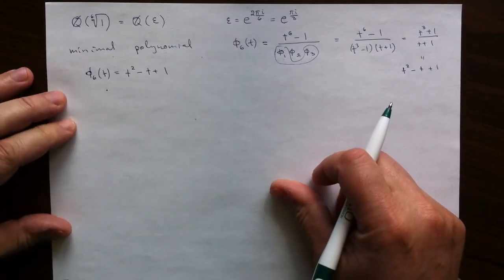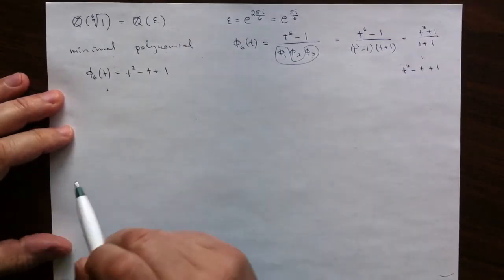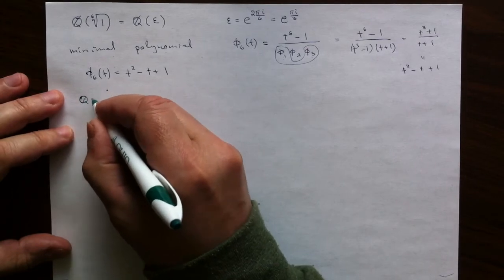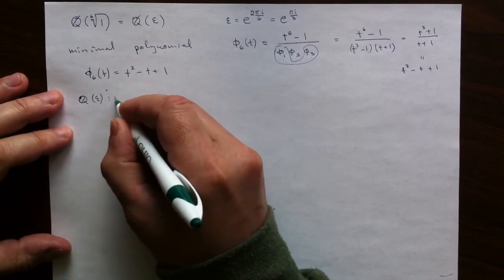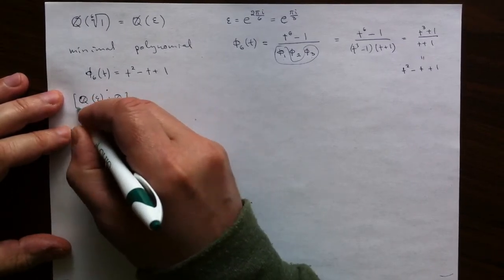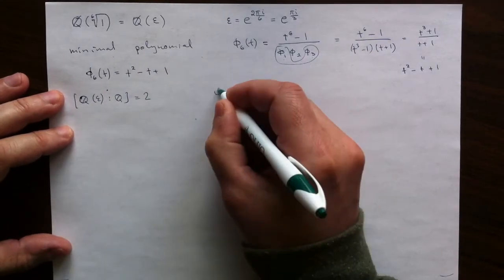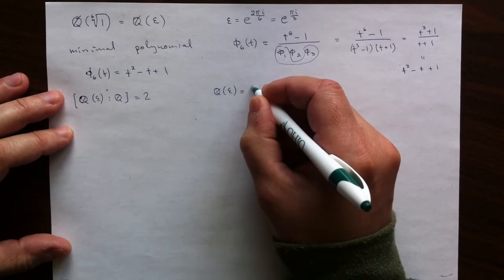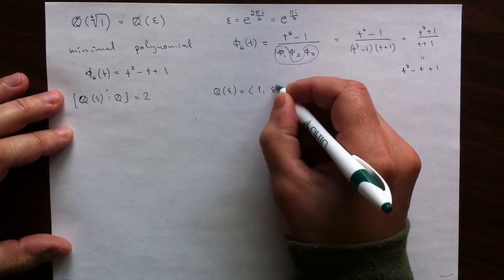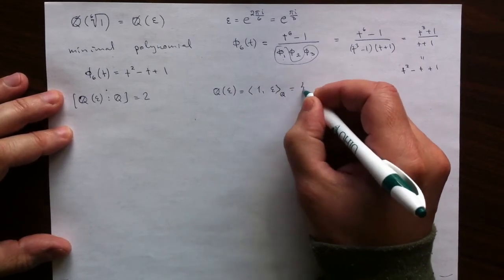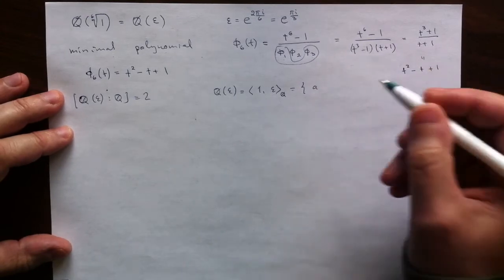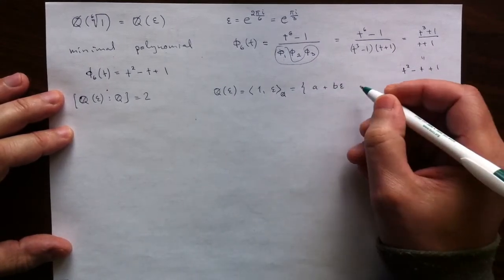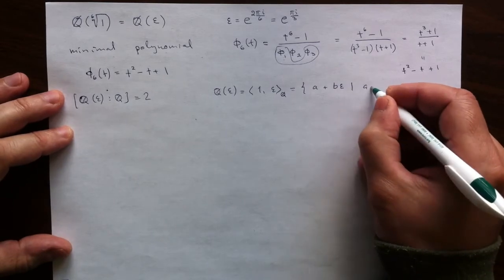It is quadratic, the degree of this extension of rationals is 2, so we have two coordinates. And the basis is just the basis of 1 and epsilon, for example. So we have a complete description as combinations of 1 and epsilon with rational coefficients.